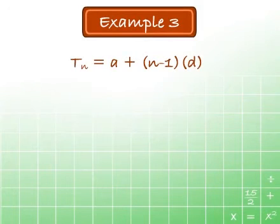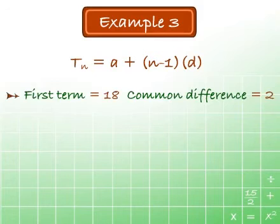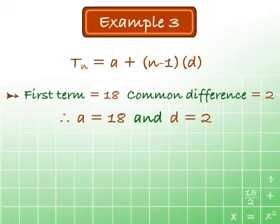Tn equals a plus n minus 1 times d. Our first term is 18, as this is the number of lengths he swims in a day, and our common difference is 2. Therefore, a equals 18 and d equals 2.